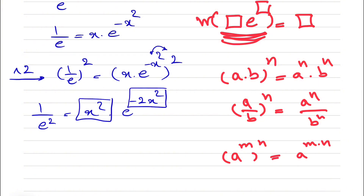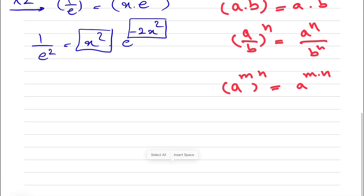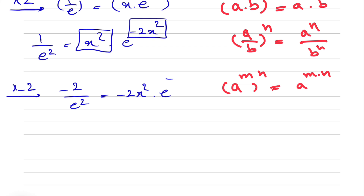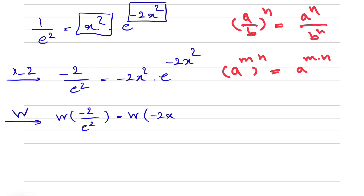We can see that we are getting close to the box that we are looking for, and it seems we are missing a minus 2 to build that box. So if we multiply by minus 2, what we're going to get is minus 2 over e squared is equal to minus 2x squared times e to the power of minus 2x squared. So now it's time for the Lambert W function. We apply Lambert W function to both sides: Lambert W of minus 2 over e squared is equal to Lambert W of minus 2x squared times e to the power of minus 2x squared.